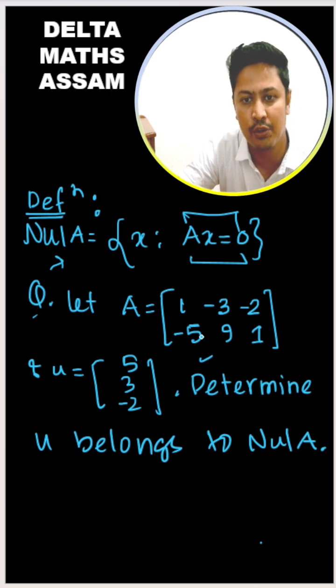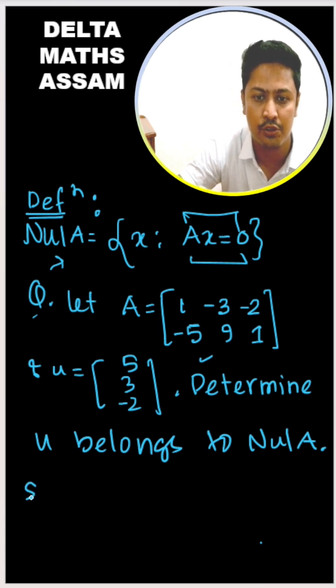Let A equal to this matrix and u is this column vector [5, 3, -2]. We will determine whether u belongs to the null space of A.